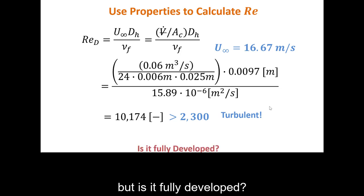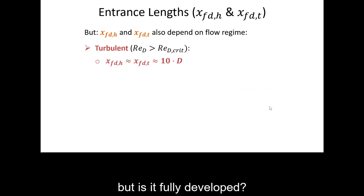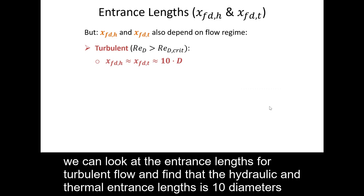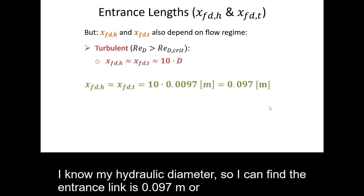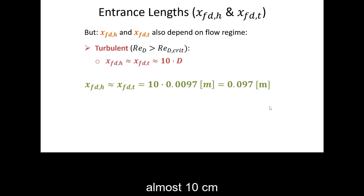But is it fully developed? We can look at the entrance lengths for turbulent flow and find that the hydraulic and thermal entrance lengths is 10 diameters into the channels. I know my hydraulic diameter so I can find the entrance length is 0.097 meters or almost 10 centimeters.